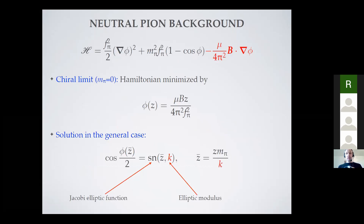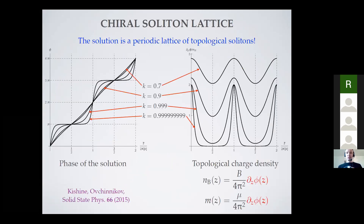In the chiral limit things really simplify because the potential term goes away. The Hamiltonian is just a quadratic function of the gradient of the pion field, and we find that in the ground state the pion field grows linearly with the coordinate — a non-trivial ground state even in arbitrarily weak magnetic fields. Off the chiral limit, we solve the pendulum equation of motion in terms of Jacobi elliptic functions, leading to similar solitonic ground state structures as discussed in the previous talks.